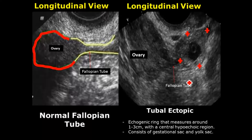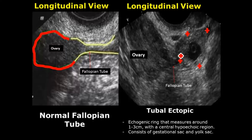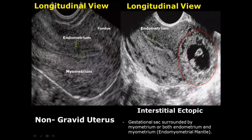Ectopic pregnancies occur outside the uterine cavity. Based on their location, there are different types. The most common is the tubal ectopic, which occurs in the fallopian tubes. We can locate the fallopian tubes by first finding the ovary and identifying the connection leading to the fallopian tube. There is a gestational sac inside the fallopian tube, confirming a tubal ectopic pregnancy.